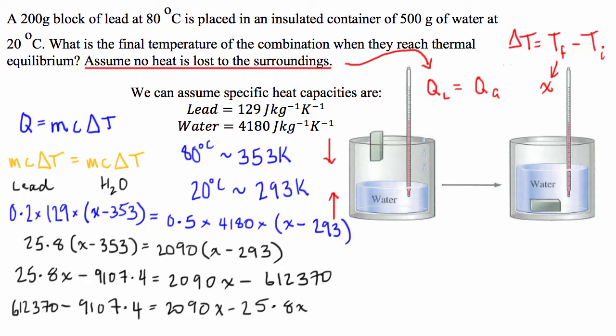So what we end up with, let's just continue this up here. What we end up with is 2064.2X is equal to 603,262.6. And then we can simply divide both sides by 2064.2, and we get an X value of 292.25. And that is going to be our temperature final.